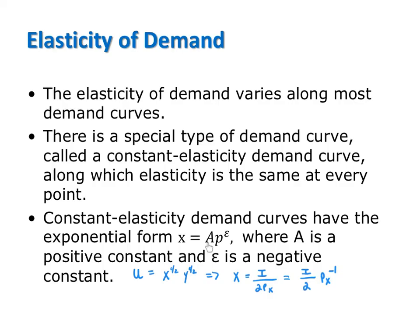In this example, A is income over 2, Px is price, which means then that elasticity of demand is minus 1, which in fact is always the case for any Cobb-Douglas utility function. So Cobb-Douglas utility functions give us constant elasticity demand curves, where elasticity is minus 1 at every point along demand.